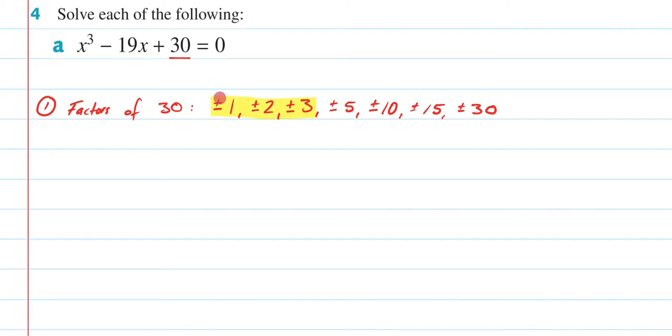And as I said in class, you always want to start with one because it's the easiest thing to sub in. So if I sub in one here, I'm going to get one minus 19 plus 30. Now, just by looking at this, we don't have to go any further. It's quite clear that isn't going to be equal to zero.